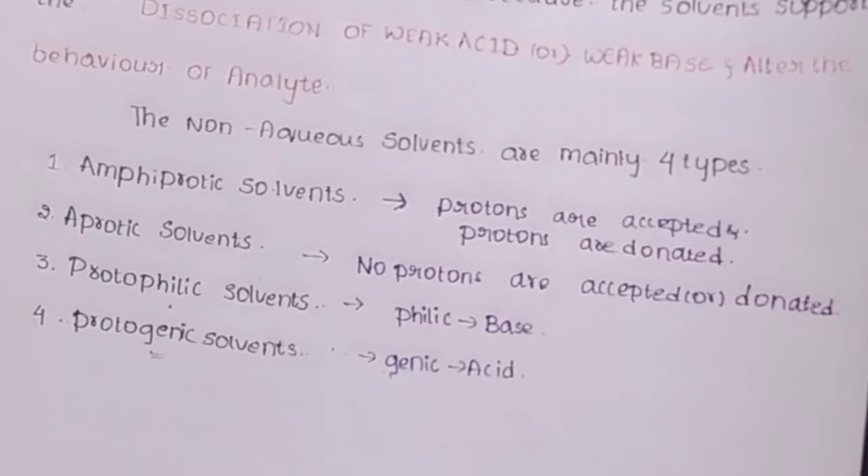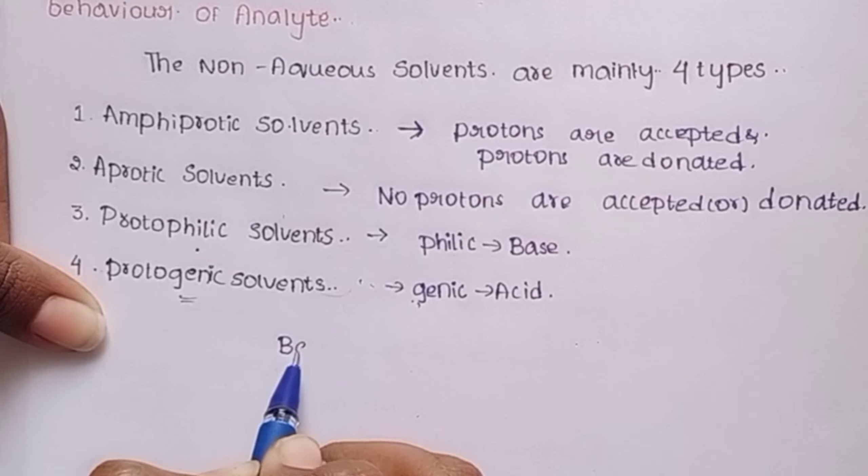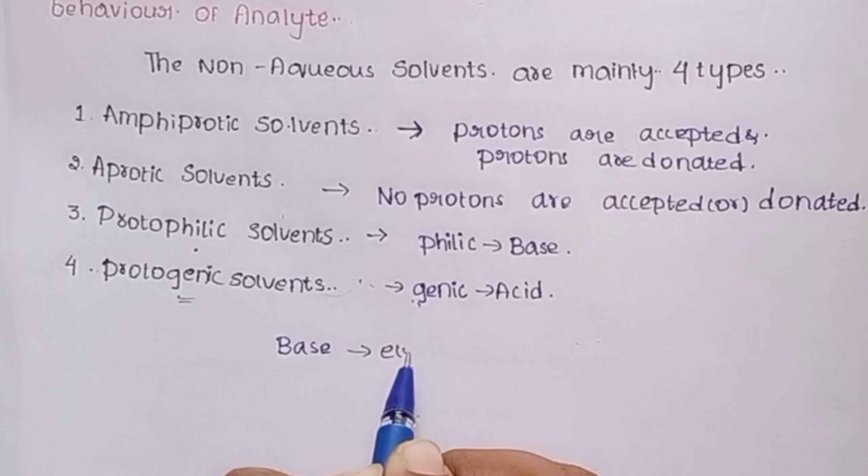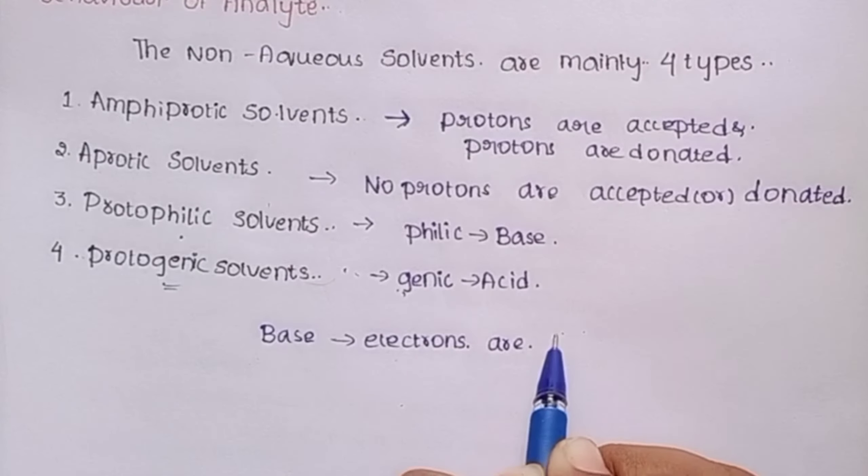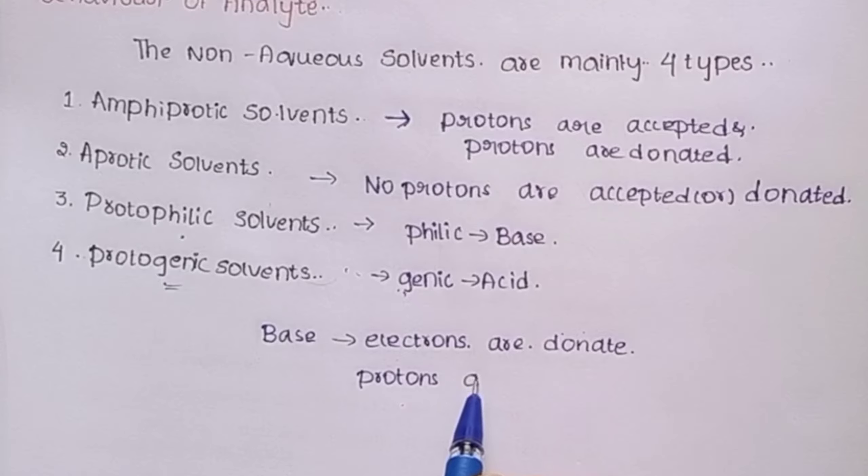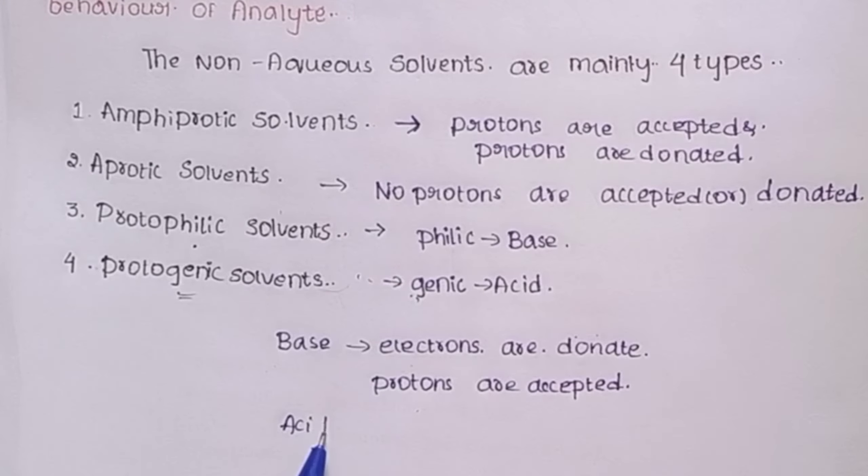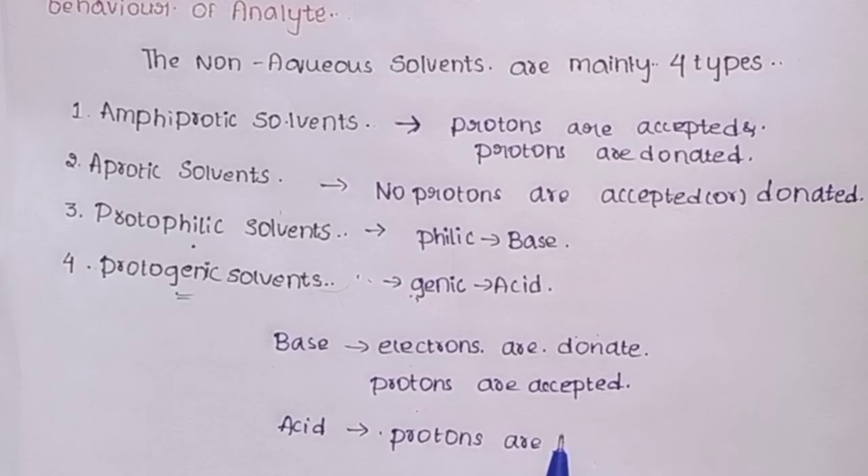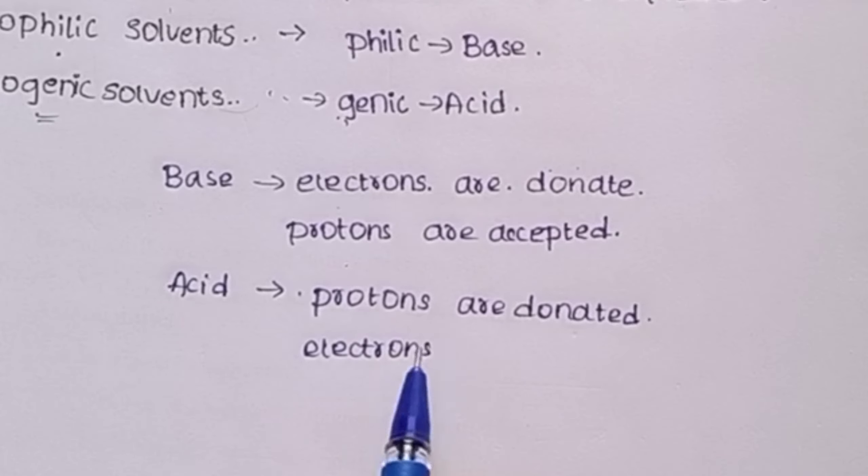Base means electrons are donated and protons are accepted. Don't get confused. Acid means protons are donated and electrons are accepted. Base and acid have this difference.